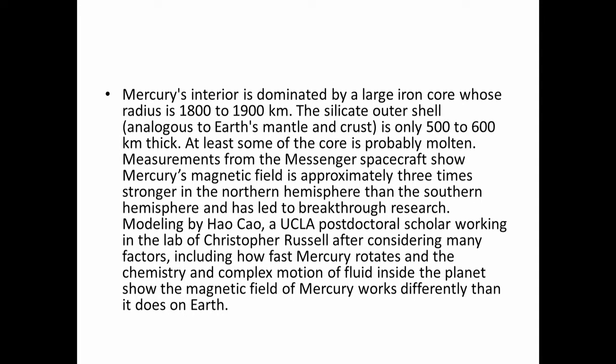This and the high eccentricity of Mercury's orbit produce very strange effects for an observer on Mercury's surface. At some longitudes, the observer would see the sun rise, gradually increase in apparent size, move towards the zenith, stop, briefly reverse course, stop again, then resume towards the horizon. All the while, the stars would be moving three times faster across the sky. Observers at other points would see different but equally bizarre motions. Mercury's interior is dominated by a large iron core with a radius of 1800 to 1900 kilometers. The silicate outer shell is only 500 to 600 kilometers thick, and at least some of the core is probably molten. Measurements from the Messenger spacecraft show Mercury's magnetic field is approximately three times stronger in the northern hemisphere than the southern, leading to breakthrough research.